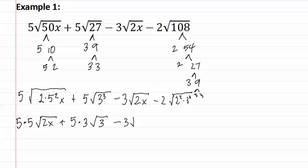The next term is already simplified. Then the final term has a two on the outside, where we have two squared on the inside, which means a two comes out and none are left in. For three cubed, a three comes out with a three left in.